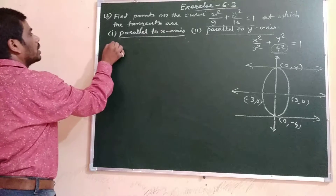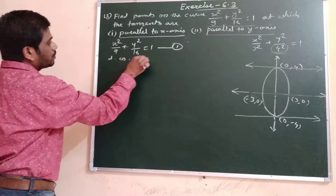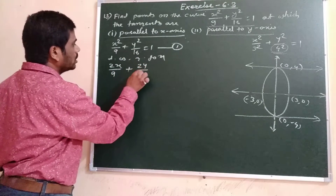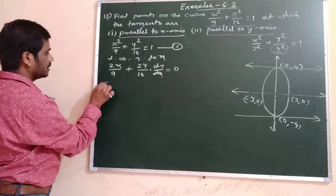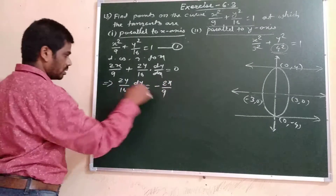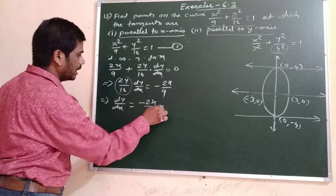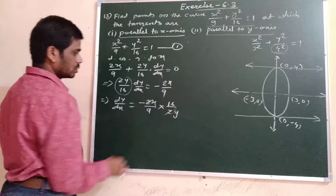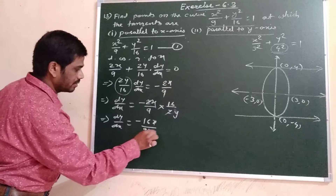Let us find the derivative of the given curve. Given x²/9 + y²/16 = 1 — this is equation 1. Differentiating with respect to x: 2x/9 + (2y/16)·(dy/dx) = 0. Rearranging: dy/dx = −(2x/9)·(16/2y) = −16x/9y. This is equation 2.